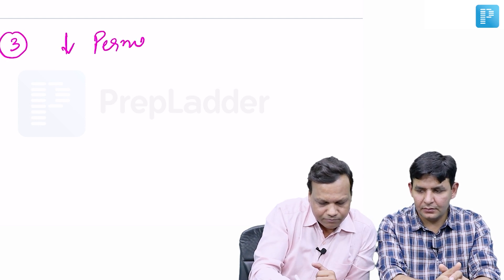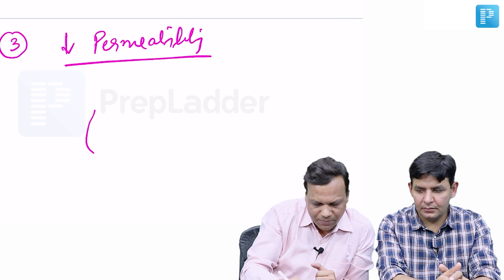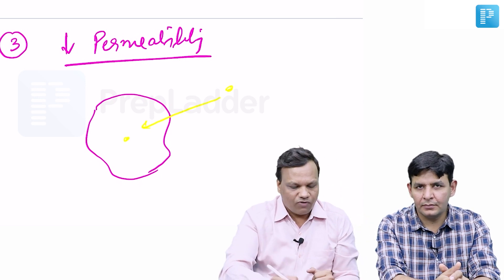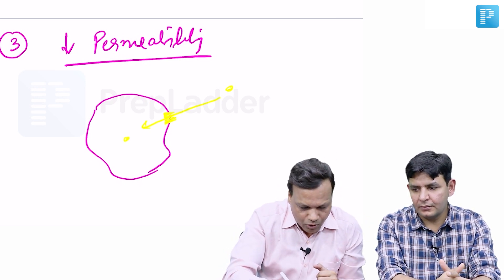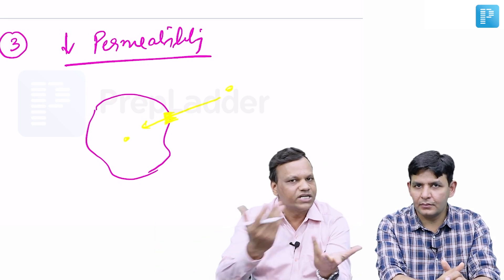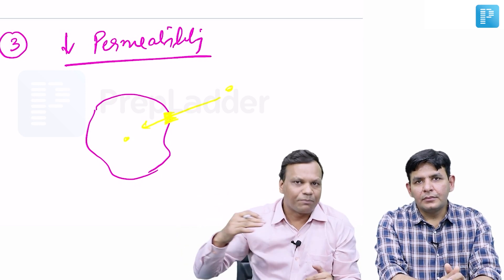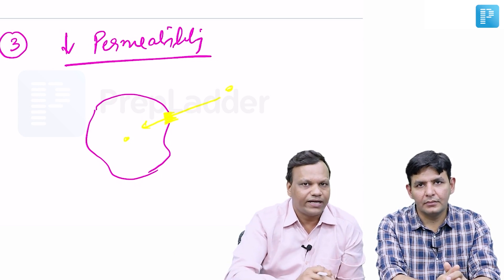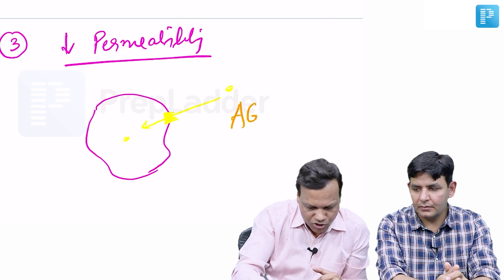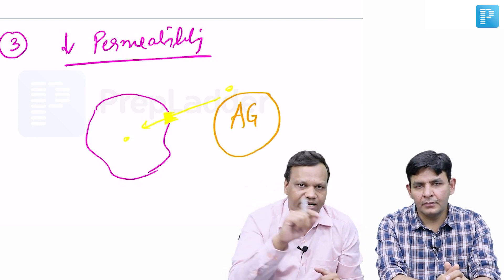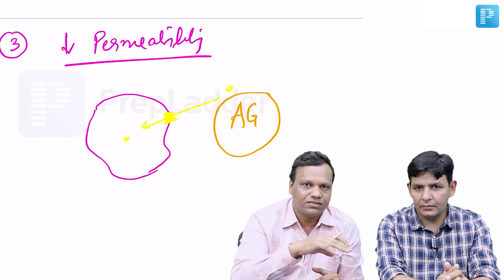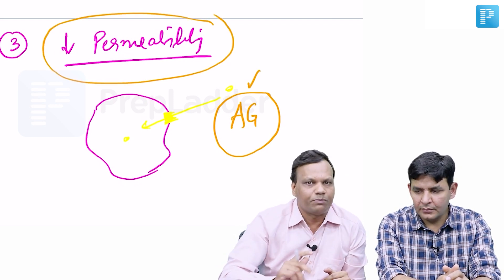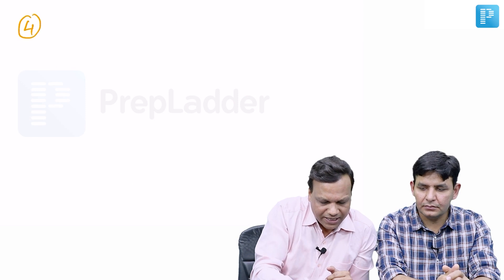The third method is decrease in permeability. The antibiotic normally goes inside the bacteria and then kills it. Now, the bacteria closes its gates so the antibiotic cannot enter and therefore cannot kill. The antibiotic must be permeable through the bacterial membranes to enter; if permeability is reduced, drug resistance occurs. This method is most important for aminoglycosides — more important than the enzymatic method for this class.